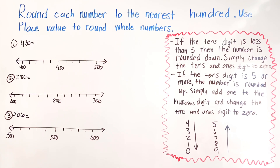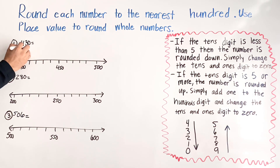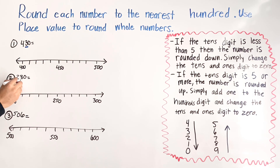We have the arrows there: four, three, two, one, zero — we're rounding down; five, six, seven, eight, nine — we're rounding up. When we're rounding to the nearest hundred, we're always going to be looking at the tens place.